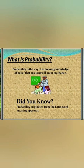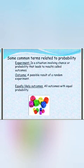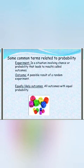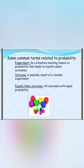Now let us recall the common terms related to probability. The first one is experiment. An experiment is a situation involving a chance or probability that leads to some results, which we normally call outcomes. For example, if we toss a coin, we may get either a head or a tail — tossing is the experiment, and head or tail are the outcomes. Outcomes are defined as the possible result of an experiment. If all outcomes have equal probability in an experiment, those outcomes are called equally likely outcomes. When you toss a coin, getting a head and getting a tail are equally likely outcomes because the probability is the same for both.